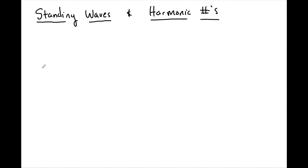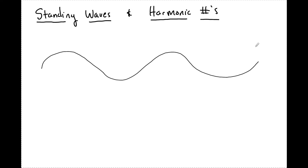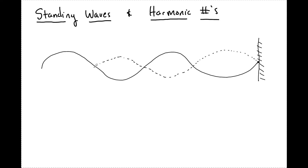When we have a wave that's traveling down a path, what will happen is it will hit a fixed point — we'll call this like a wall. Now once it hits that wall, we know that waves reflect with an opposite amplitude. So it's going to hit the wall here, but then it is going to bounce back this way. I apologize — this is the worst standing wave picture I've ever drawn.